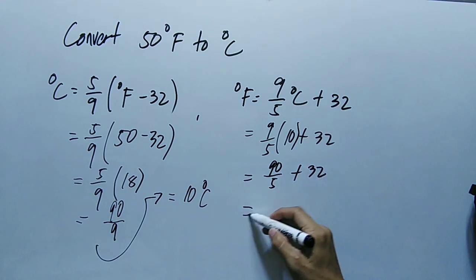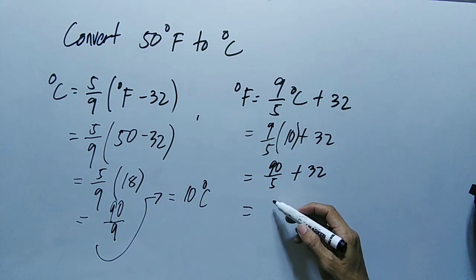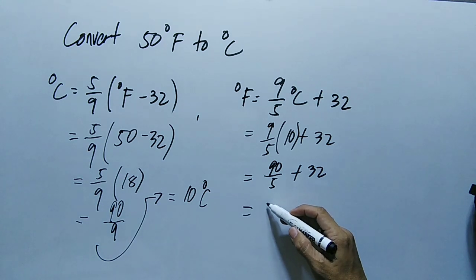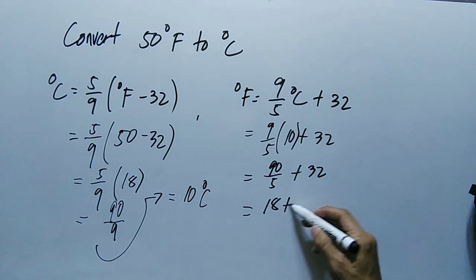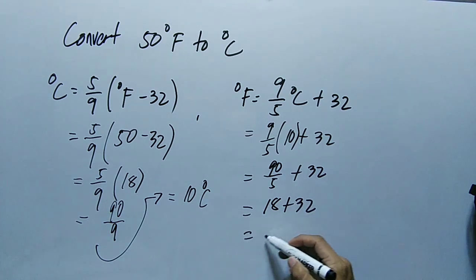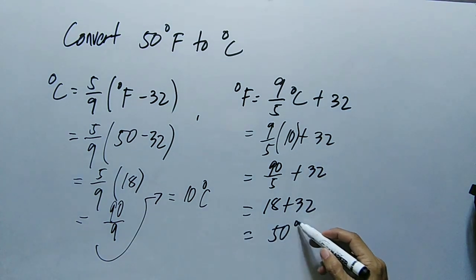Then equals 90 divided by 5, that is 18. Then 18 plus 32, that is equal to 50 degree Fahrenheit. So this is your final answer.